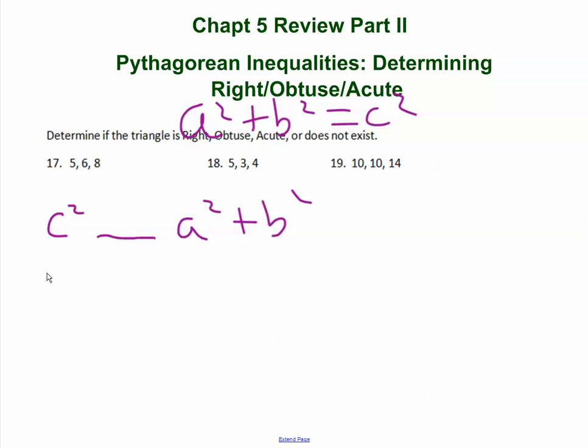So let's go ahead and do number one. We've got 8 squared, our biggest number, blank, 5 squared plus 6 squared. So that's 64 blank 25 and 36. So that's 25 plus 36, so that's 61, right?